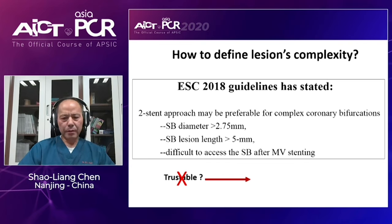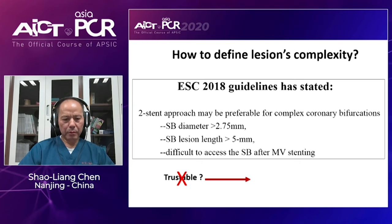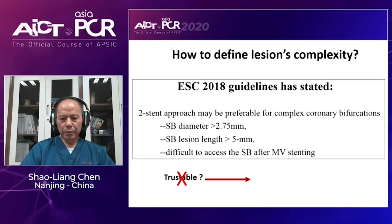This slide shows the definition criteria we reported in 2015. For bifurcation with Medina 111 or 011 — two kinds of true coronary bifurcation — and with side branch diameter minimum 2.5 mm, we created one major criteria for both left main and non-left main bifurcation. The requirement for side branch lesion length was 10 mm, and side branch diameter stenosis was 70% for distal left main bifurcation and 90% for non-left main bifurcation. We also provide six minor criteria: more than mild calcification, multiple lesions, very angulated bifurcation angle, main vessel reference diameter more than 2.5 mm, main vessel lesion length minimum 25 mm, and lesions with thrombosis.